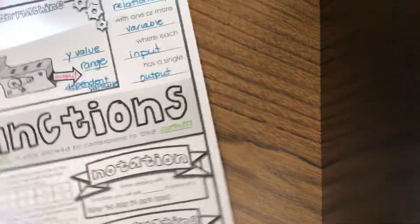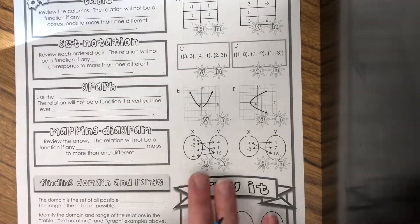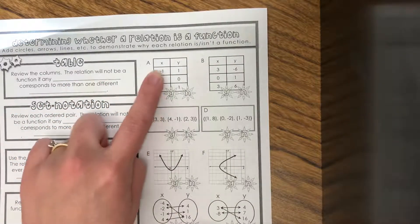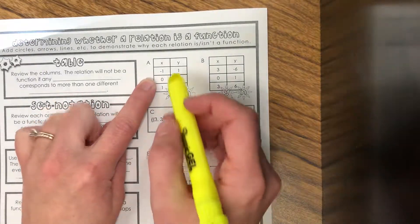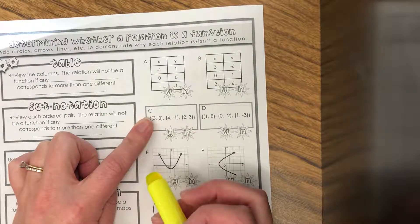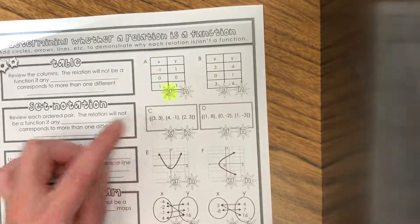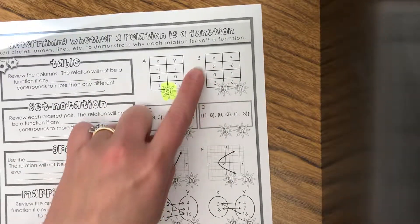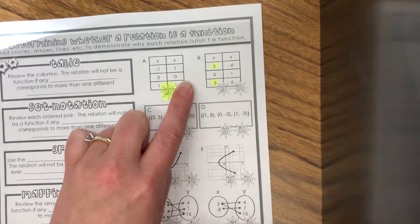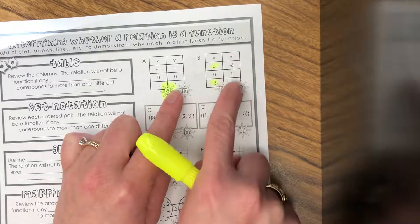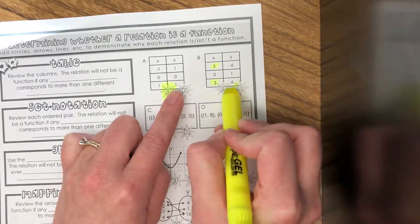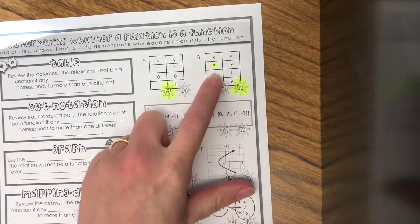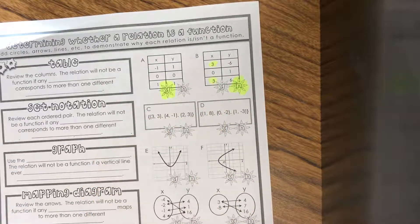Let's do some examples on the back. Let's look at A. A is another table, so look at your X values, this is your input. X represents input. None of them are repeating, so A must be a function. That means every input has only one output. But what about B? I see an input of three twice. The input of three has two different outputs. That means it's not a function.